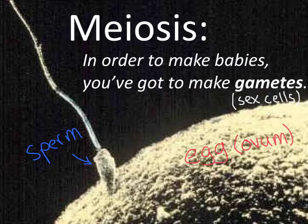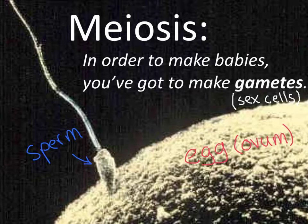This little cell right here with the flagellum is a sperm approaching a very large ovum, which is the fancy name for egg. And the unique combination of genes held inside the nucleus of this sperm and the nucleus of this egg, once combined, will make a baby with a new combination of genes that has never been seen before.